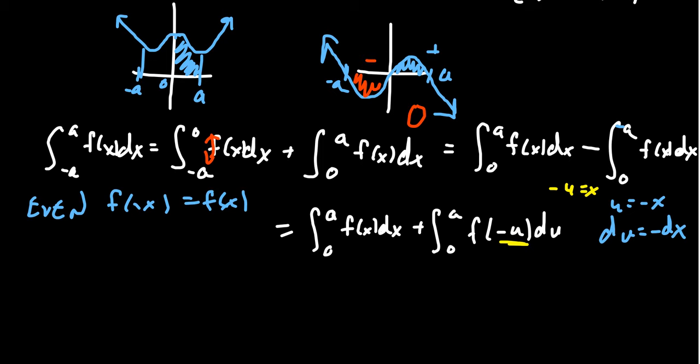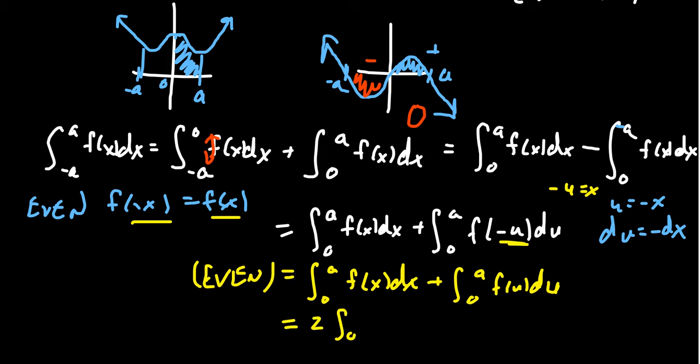This is the moment where you can use symmetry. So if your function was even, then f of negative u will become f of u. Under the even hypothesis, this statement looks like the integral from zero to a f of x dx plus the integral of zero to a of f of u du. Although the variables are different, f of x and f of u, it's the same thing. This is just going to double up and give us two times the integral from zero to a of f of x dx. That's what happens for the even case.